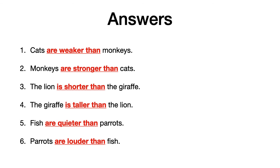So the answers are. One: Cats are weaker than monkeys — los gatos son más débiles que los monos. Two: Monkeys are stronger than cats — los monos son más fuertes que los gatos. Three: The lion is shorter than the giraffe — el león es más bajo que la jirafa. Four: The giraffe is taller than the lion — la jirafa es más alta que el león. Five: Fish are quieter than parrots — los peces son más silenciosos que los loros. Six: Parrots are louder than fish — los loros son más bulliciosos que los peces.